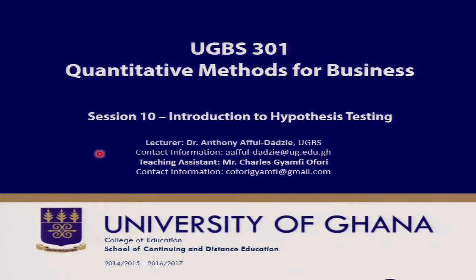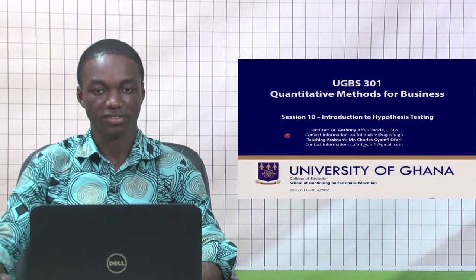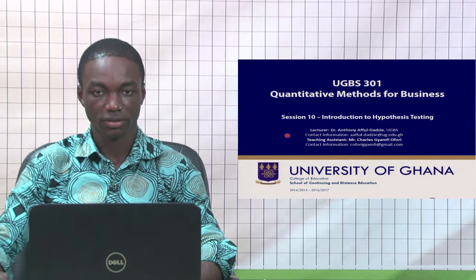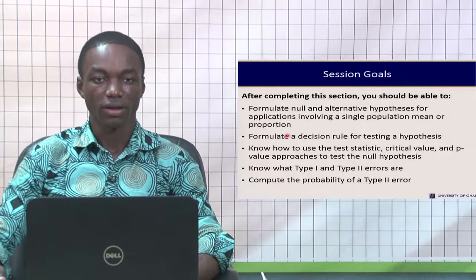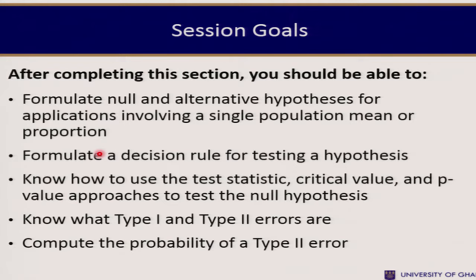Welcome to session 10 of UGBS 301. Today we would like to take an introduction to hypothesis testing. At the end of this course, you should be able to learn how to formulate the null and alternate hypothesis for applications involving a single population mean or proportion.